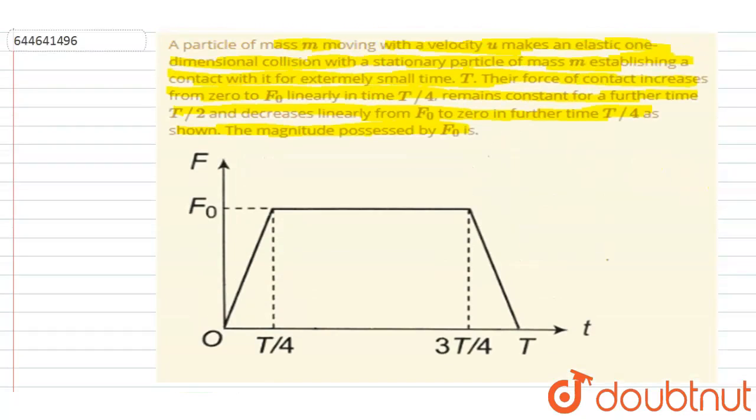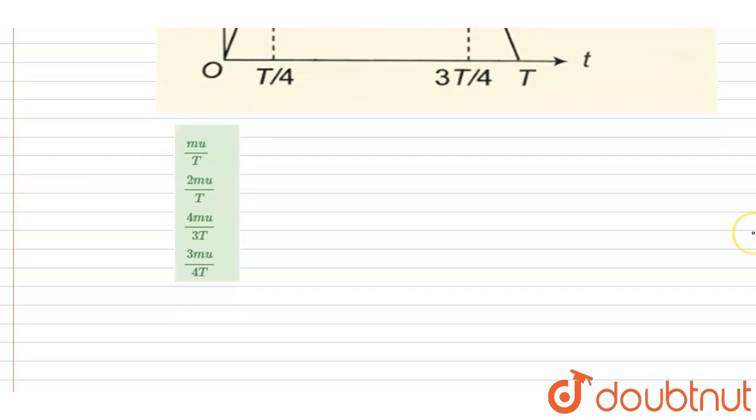It is given that elastic one-dimensional collision with a stationary particle of same mass m, right? So the masses are same and collision is elastic. So we know that in elastic collision between two...